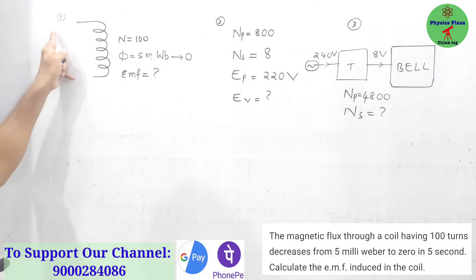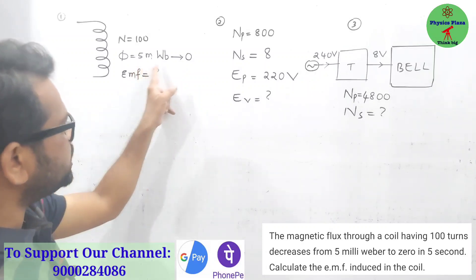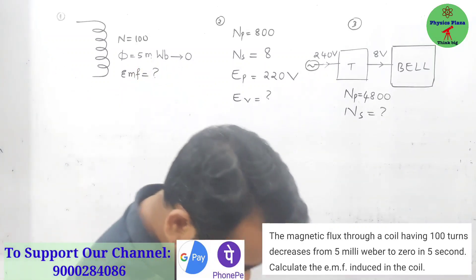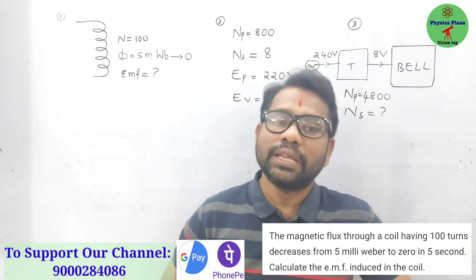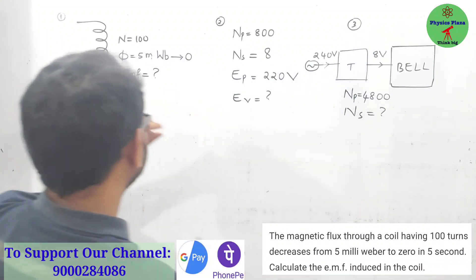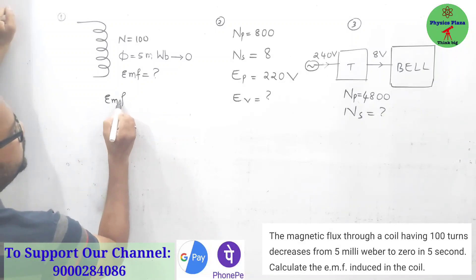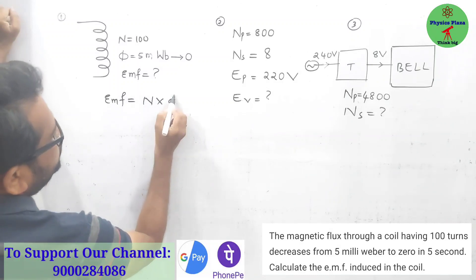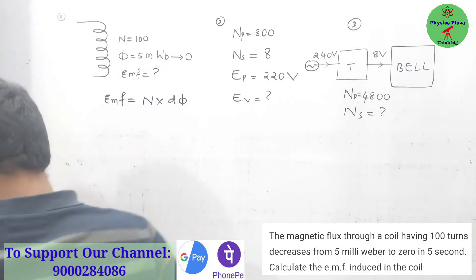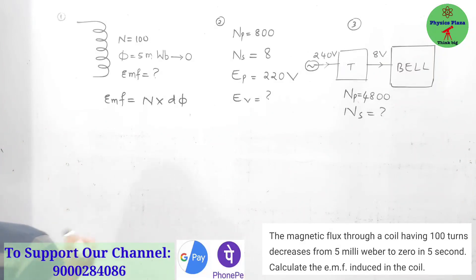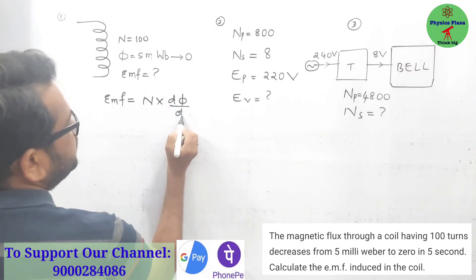As per this question, it is given that in this coil the number of turns are 100 and the magnetic flux is changed from 5 milliweber to zero. There is a change in magnetic flux. Children, whenever there is a change in magnetic flux, there will be an EMF induced. They are asking us to calculate the EMF. So here, EMF is equal to number of turns into change in magnetic flux by dt. Time is given as 5 seconds.